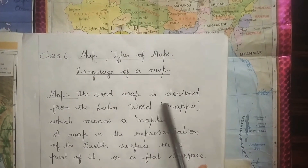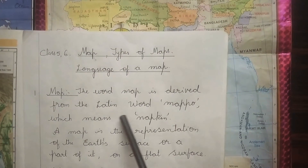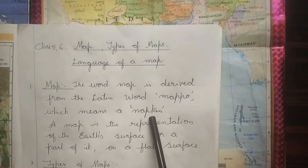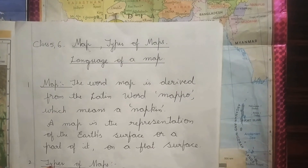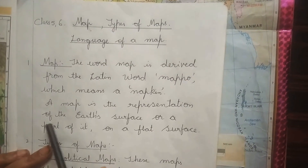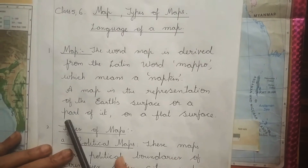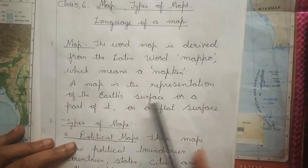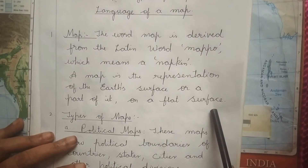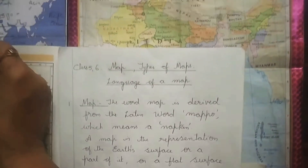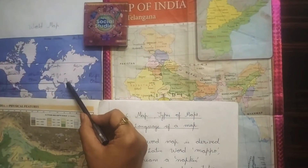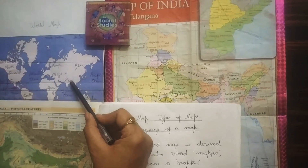Map. The word map is derived from the Latin word 'mappa' which means a napkin. Now, the definition of a map: a map is a representation of the earth's surface or a part of it on a flat surface. This is the representation of the earth on a flat surface.